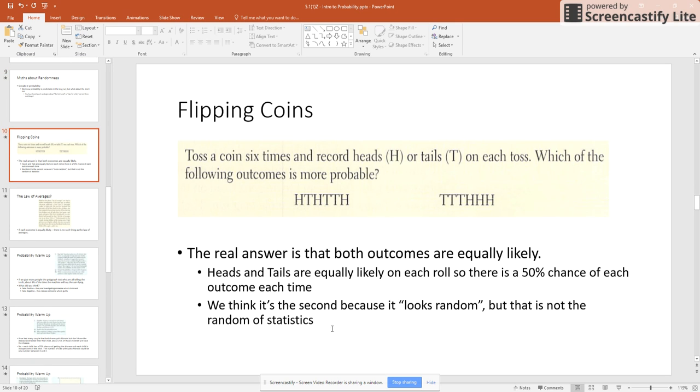So flipping coins, toss a coin six times and record heads or tails on each toss. Which of the following outcomes is more probable: that I get heads, tails, heads, tails, tails, heads, or that I get tails, tails, tails, heads, heads, heads?